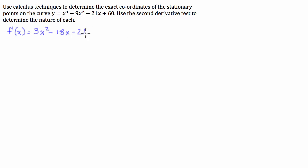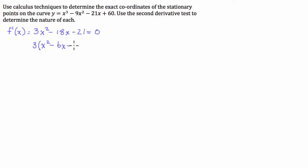That's our derivative. To find the coordinates of the stationary points, a stationary point is when the derivative is equal to zero. This sort of question would be in the non-calculator section, so you'll need to brush up on your algebra skills. The first thing we're going to do to solve for x is factorize by 3, which leaves us with x squared minus 6x minus 7 equals zero.